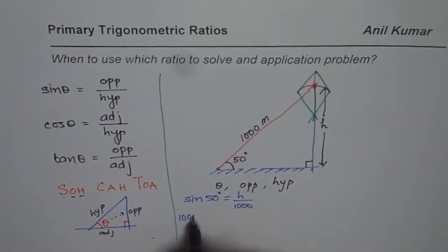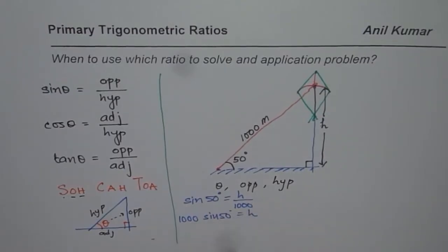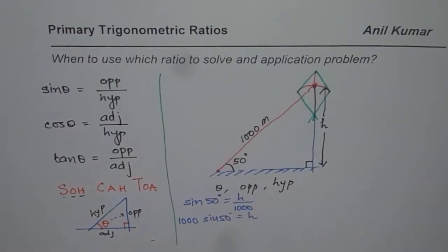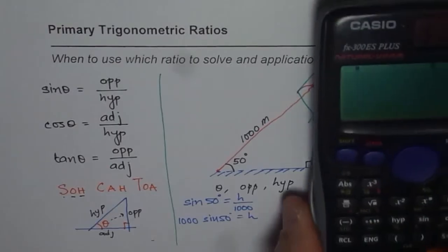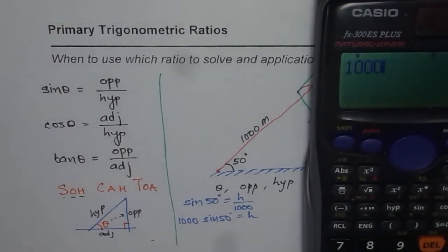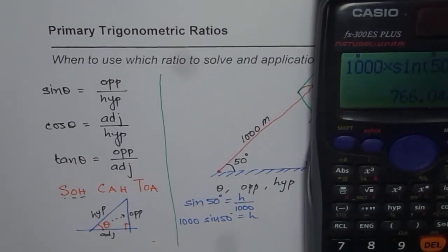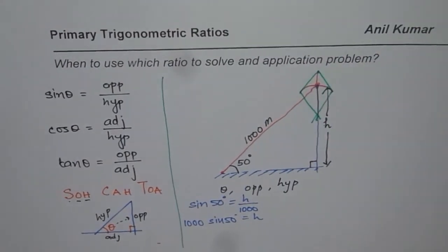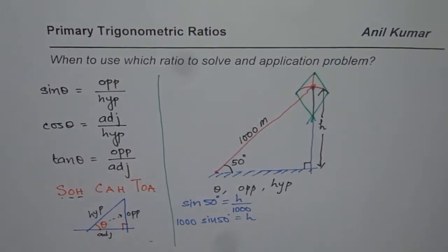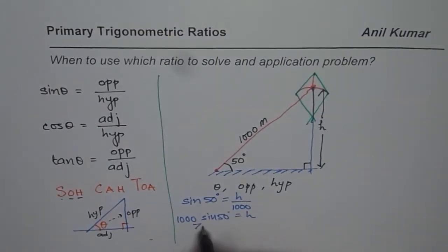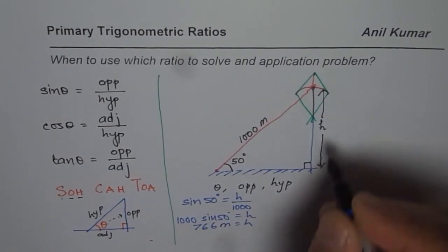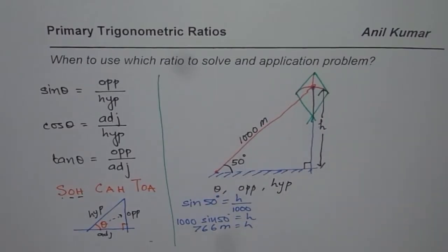So 1000 times sine of 50 degrees equals the height. Using a calculator, we get 1000 times sine of 50 degrees equals approximately 766. So in this particular case the height is 766 meters. You can find height using the sine ratio.